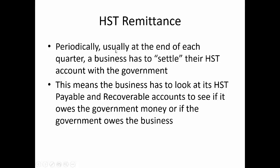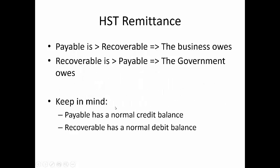Periodically at the end of each quarter, the business has to settle their HST accounts with the government. Since we have two accounts — the recoverable and the payable — we have to figure out who owes whom what. We look at the payable and recoverable accounts to see if the government owes us money or if we owe the government money. If the payable account is greater than the recoverable account, we owe the government. If recoverable is greater than payable, the government owes us.